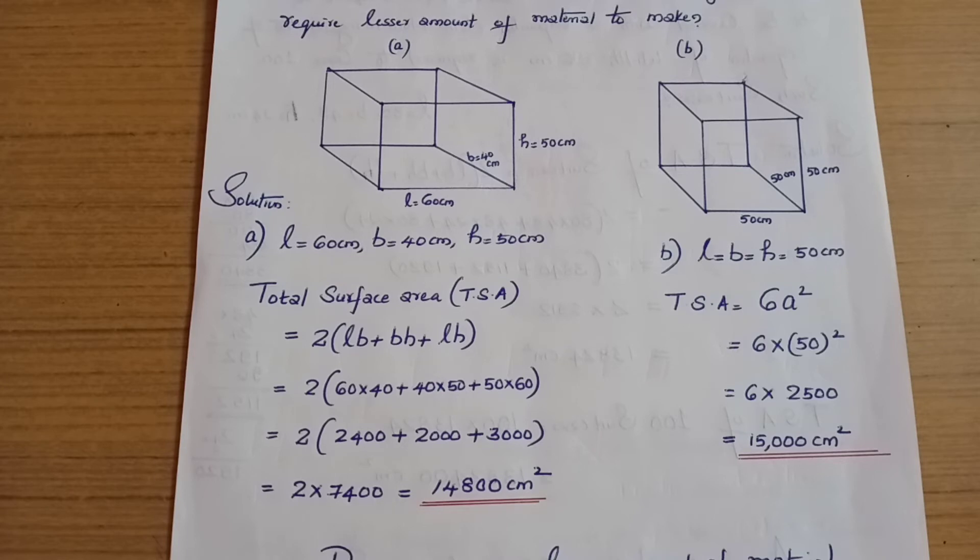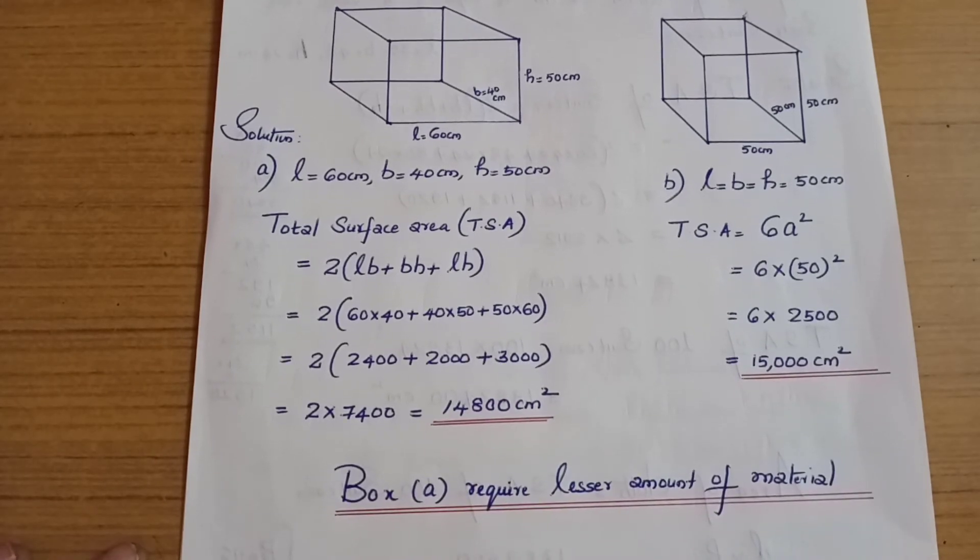2 into 7400 equals 14,800 cm squared. That is the total surface area for box A.